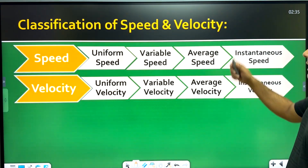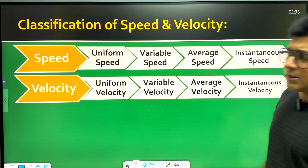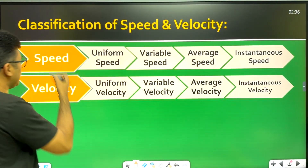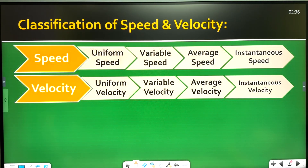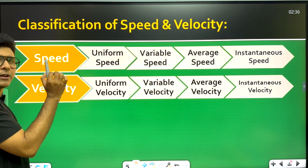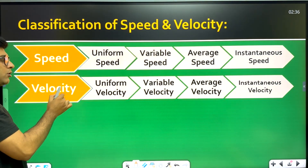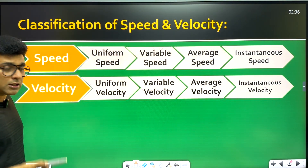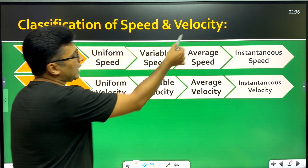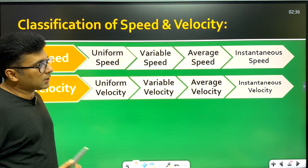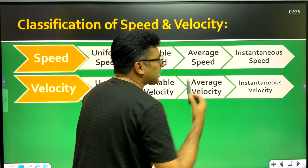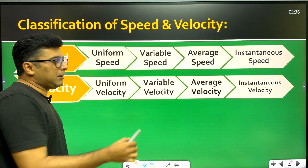Now the classification of speed and velocity. Speed and velocity can each be classified into: uniform speed and uniform velocity, variable speed and variable velocity, average speed and average velocity, and instantaneous speed and instantaneous velocity.